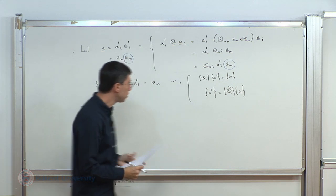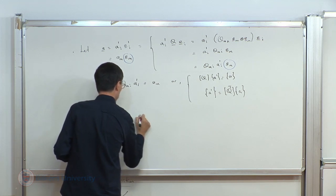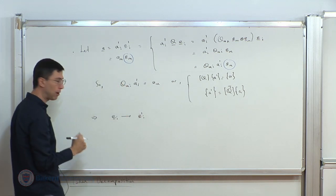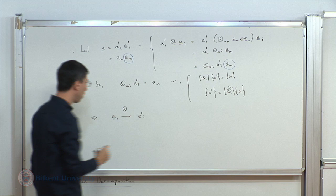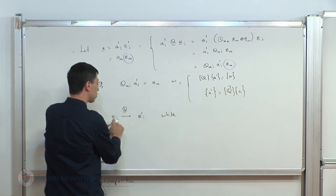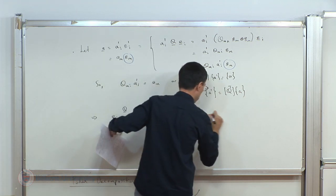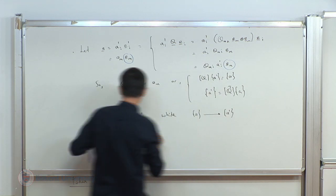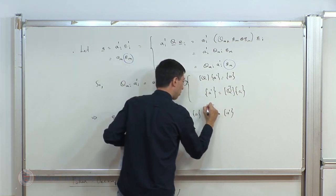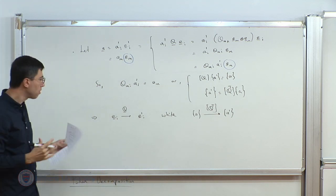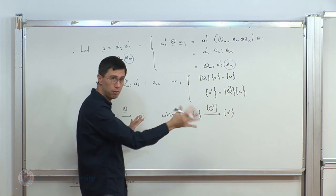Therefore A_prime equals Q_transpose times A. So if you rotate your basis and the vector is the same, the components transform with Q transpose. We have two sets of bases E_I and E_I prime related by rotation tensor Q, and the components with respect to the first basis transform to the second through Q transpose.